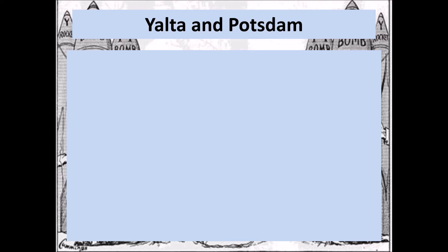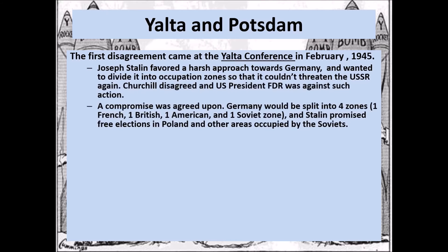Now we're going to talk about where the disagreement between the Soviet Union and the United States became public. The first disagreements happened at Yalta and Potsdam during the end of World War II. At the Yalta Conference in February 1945, Stalin favored a harsh approach toward Germany and wanted to divide it into occupation zones so it couldn't threaten the USSR again. Churchill and FDR disagreed, arguing that being too strict toward Germany hadn't worked after World War I. A compromise was reached: Germany would be split into four zones — French, British, American, and Soviet — and Stalin promised free elections in Poland and other Soviet-occupied areas.